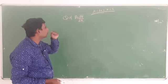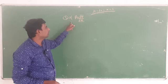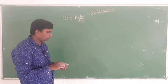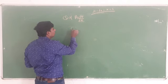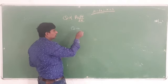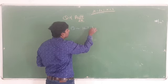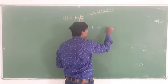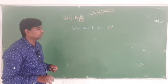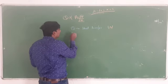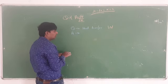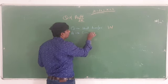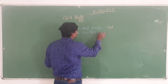So Q is directly proportional to A·dT/dx. In Fourier's law of heat conduction, Q stands for heat transfer. A stands for cross-sectional area, with unit meter square.